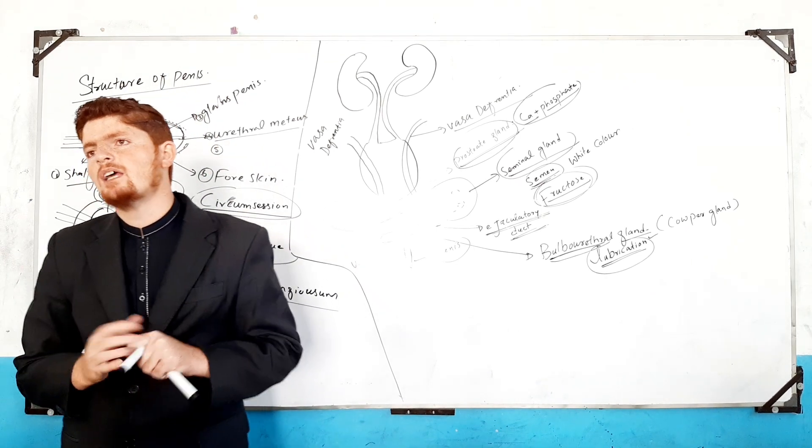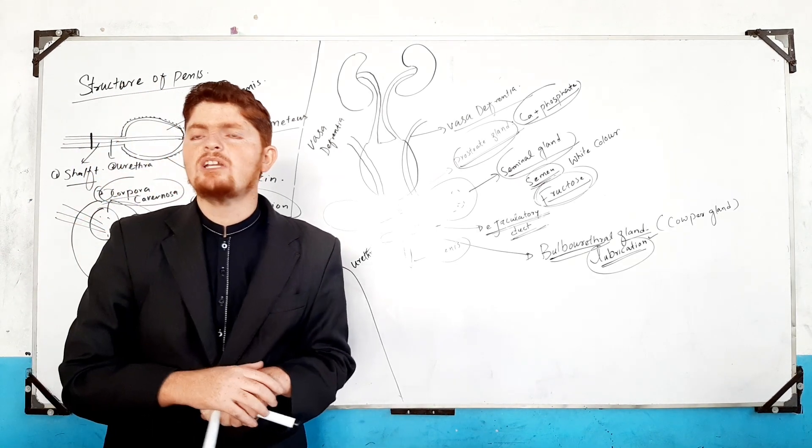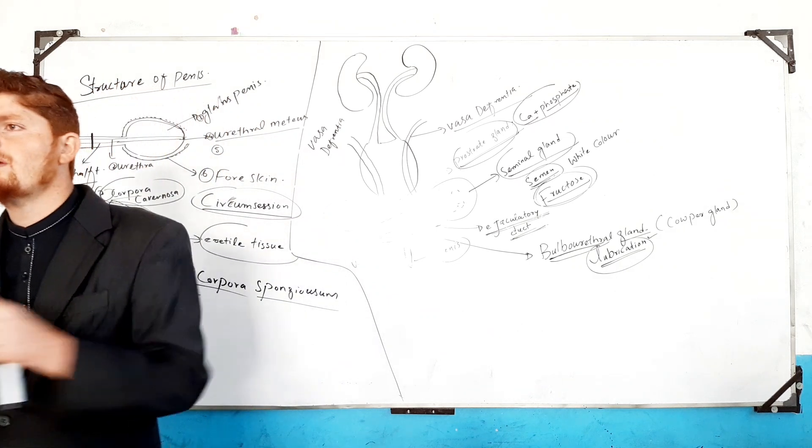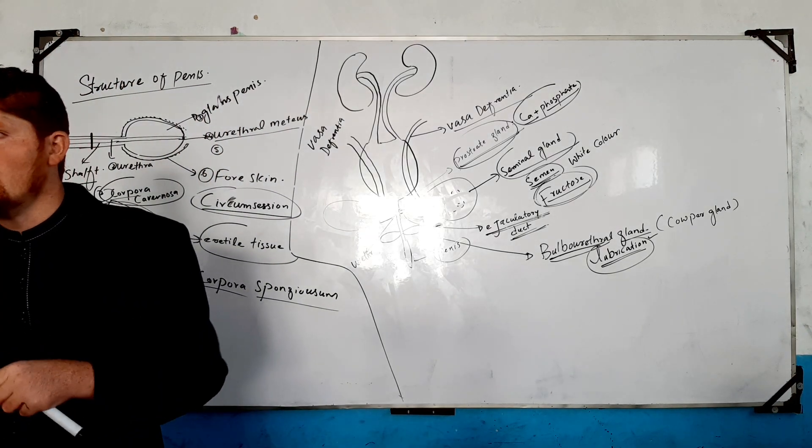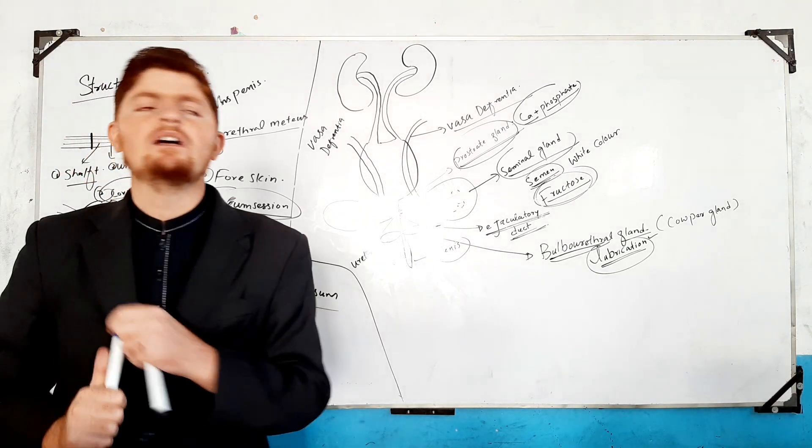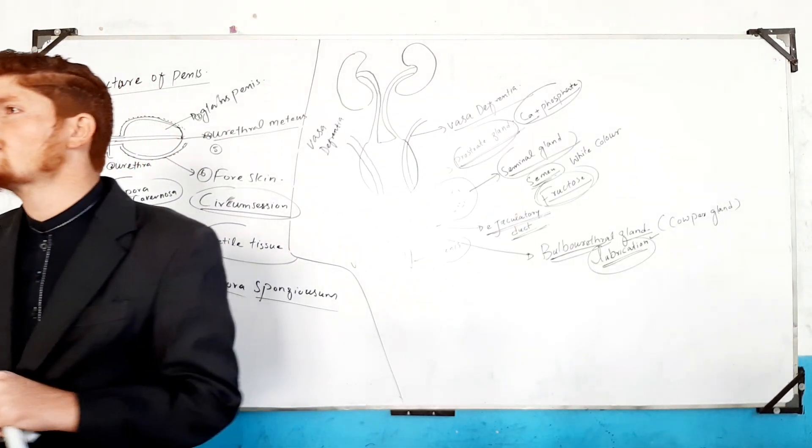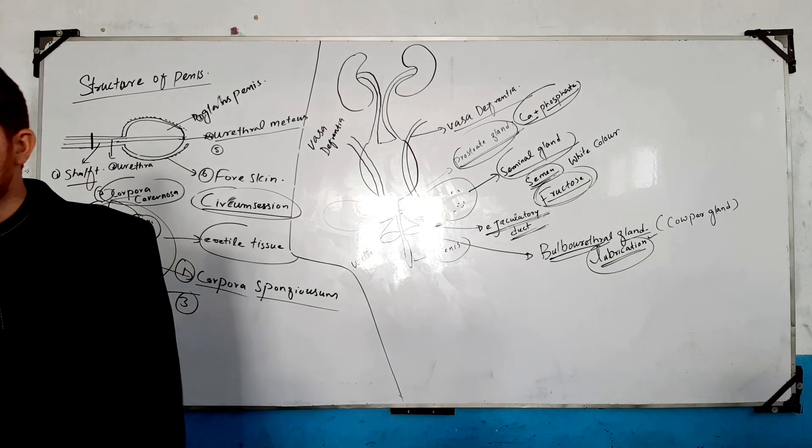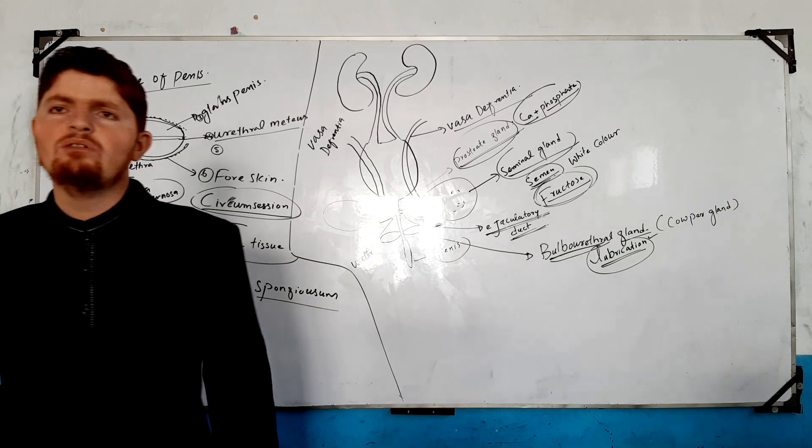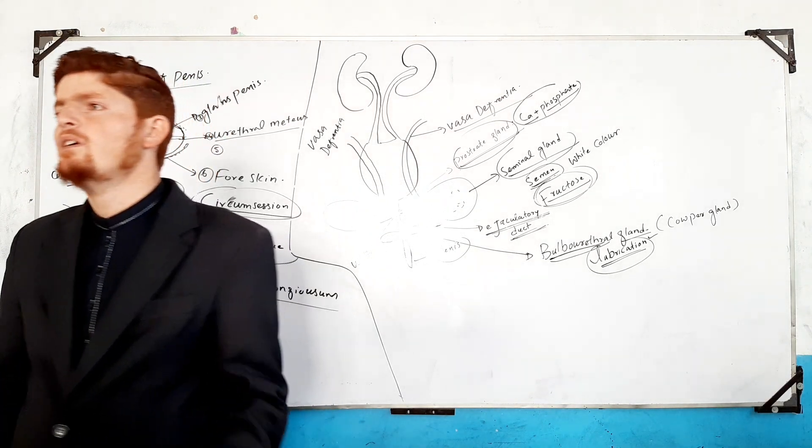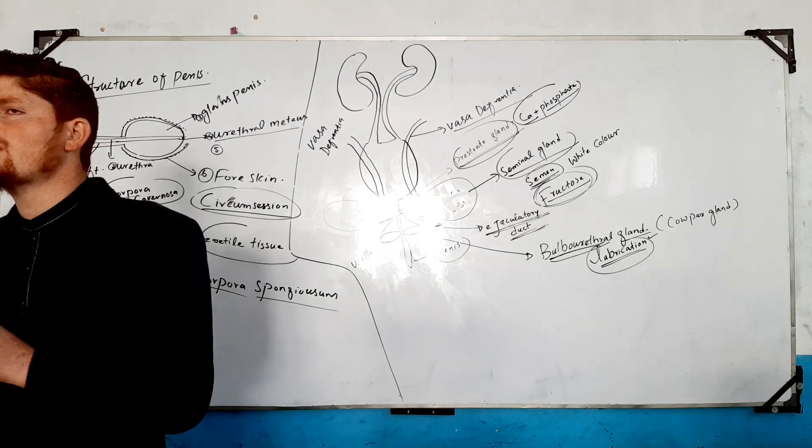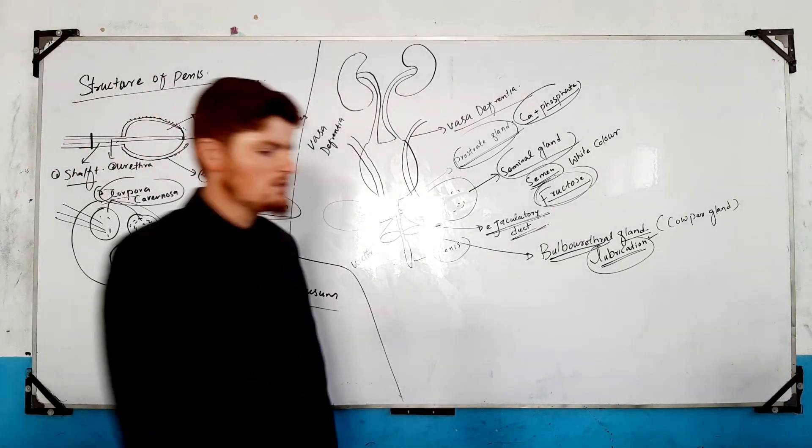Then the erection involves erectile tissue, the corpus and the cartilage erectile tissue. The blood creates the erection. This is the male reproductive system, and now the female reproductive system.